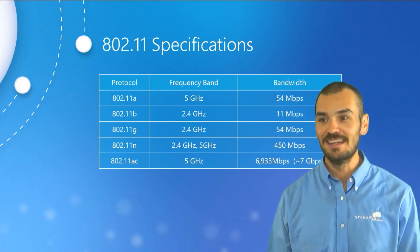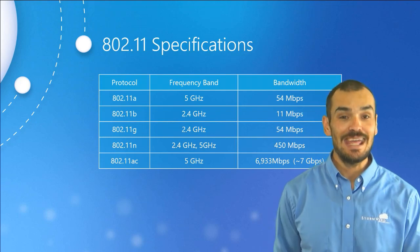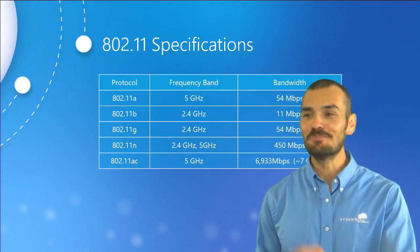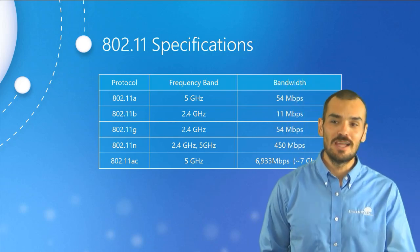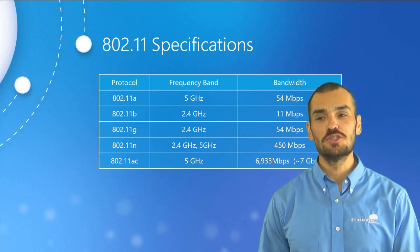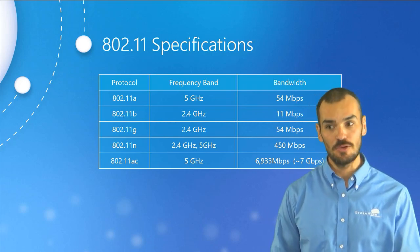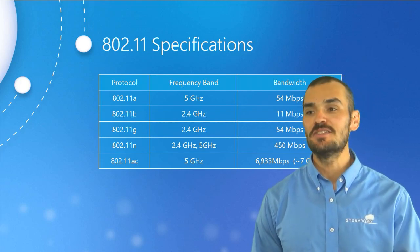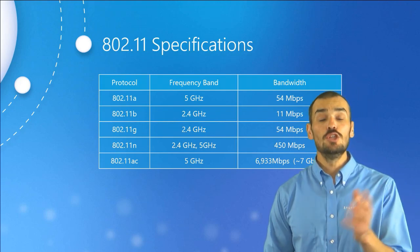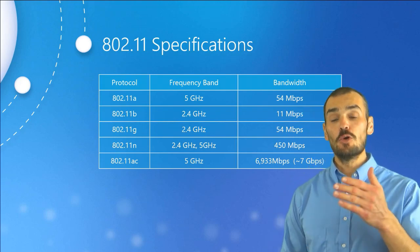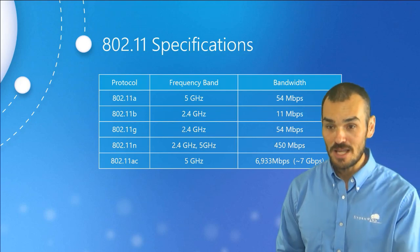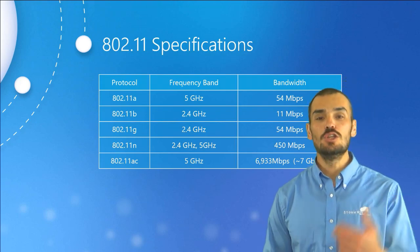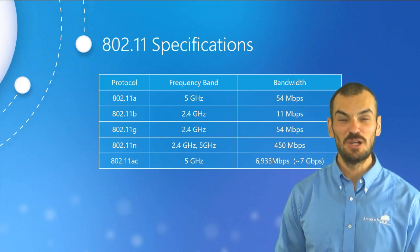The 802.11a specification was ratified also in 1999, a little bit later on, and moved beyond the limitations of the 2.4 gigahertz band to leverage more channels and higher data rates. A lot of non-802.11 devices like microwaves and cordless phones use the 2.4 gigahertz band, so by using the 5 gigahertz band with 802.11a, we didn't have as many devices to compete with.